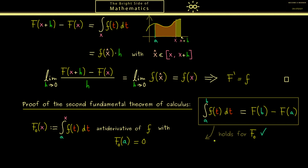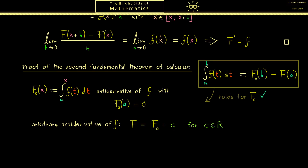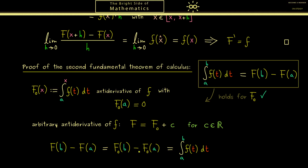The second step shows that for an arbitrary antiderivative the formula still holds. Choose an arbitrary antiderivative capital F. From the last video we know that two antiderivatives differ only by an additive constant c, so F can be written as F₀ plus c. With this we can simplify F(b) minus F(a): in this difference the term c vanishes, so instead of F we can write F₀. But for F₀ we have already shown the formula holds, and so in summary we get the formula for any antiderivative of f.